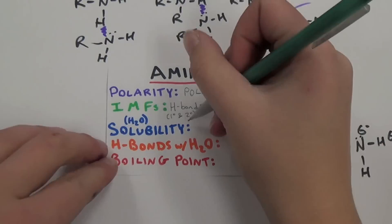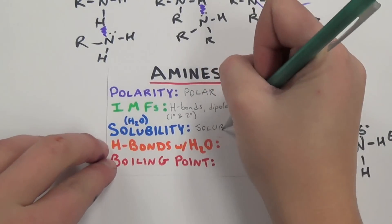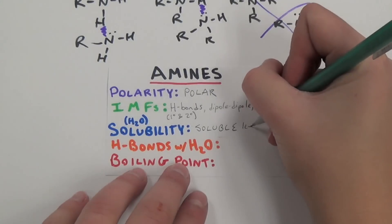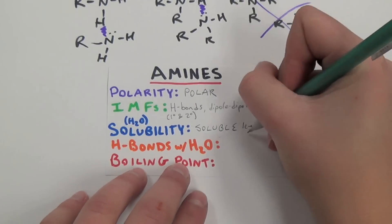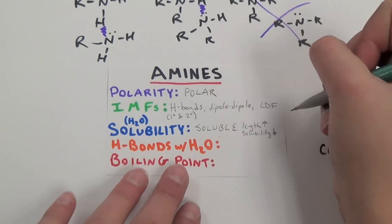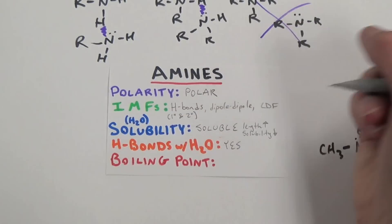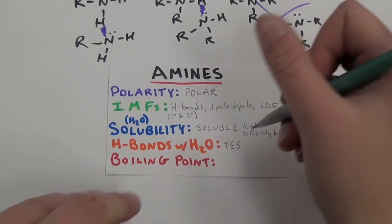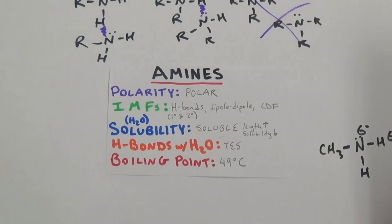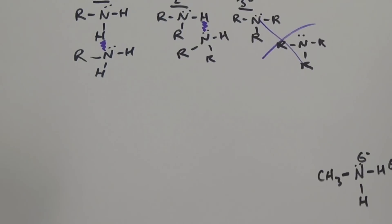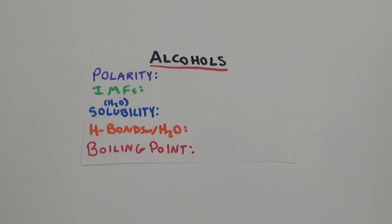Because of this polarity, amines are soluble in water, with the shorter strands being fully miscible. Due to their ability to hydrogen bond — again, only first and second degree — the boiling point is about 49 degrees Celsius and increases with the length of the carbon chain.